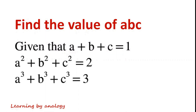Given that a plus b plus c equals 1, a squared plus b squared plus c squared equals 2, a cubed plus b cubed plus c cubed equals 3. Find the value of abc.